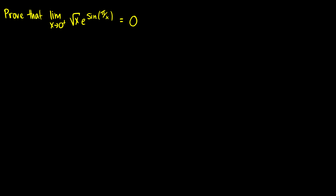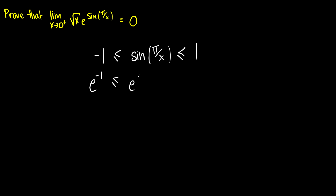We start with the function sine of pi over x. The upper and lower bounds on this function are between negative one and one, since any sine or cosine is bounded by negative one and one. So sine of pi over x is between negative one and one. Now let's raise everything to the power of e: e to the negative one is less than or equal to e to the sine of pi over x, which is less than or equal to e to the one.